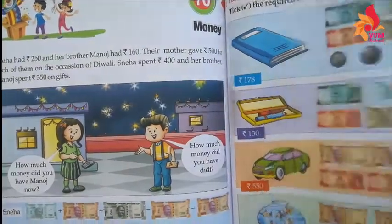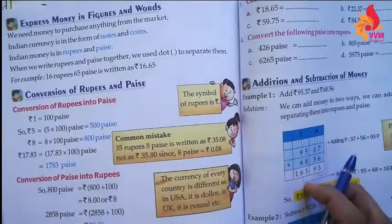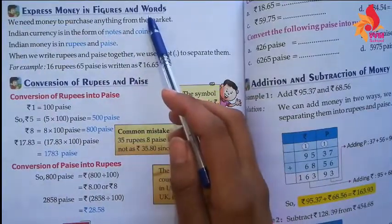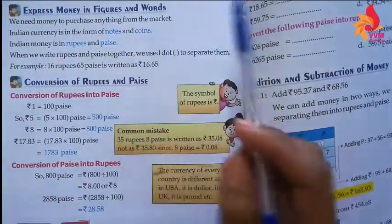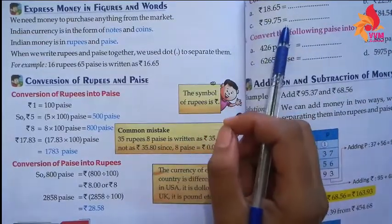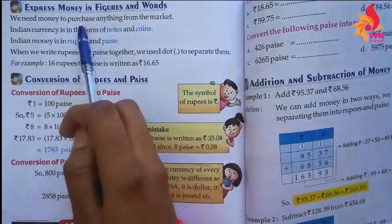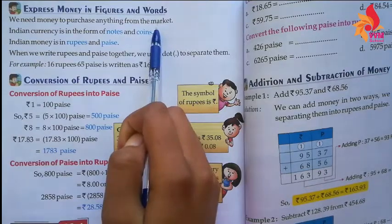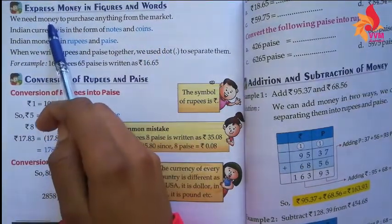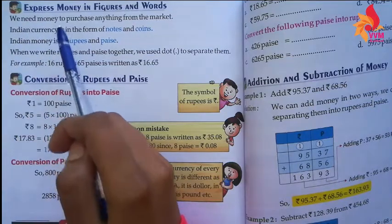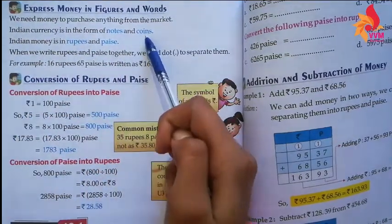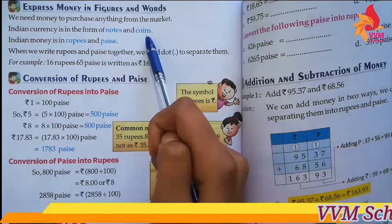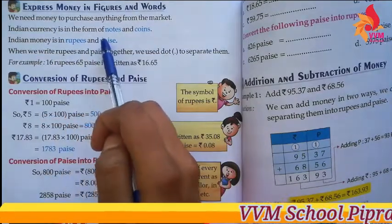Our Indian currency is in the form of notes and coins. The first topic of this chapter is: how to express money in figures and words. We need money to purchase anything from the market. Indian currency is in the form of notes and coins.